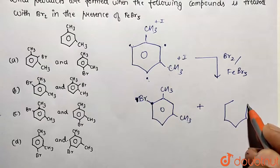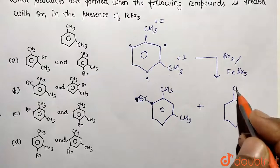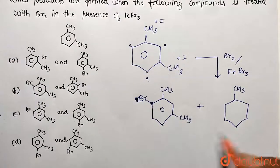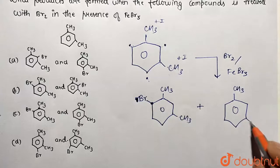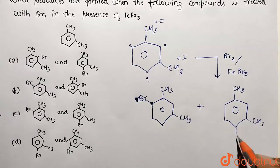Secondly, over here, this is going to be the ortho substituted product. CH3 over here we have done with its para, so we have to go with its ortho position. This is going to be CH3 and Br will be attached over this side.